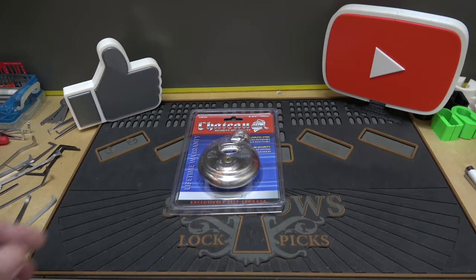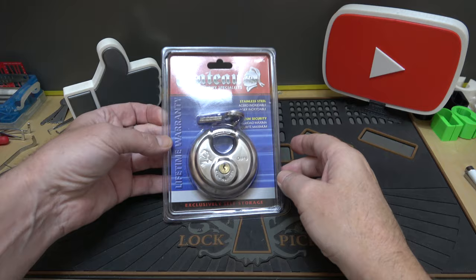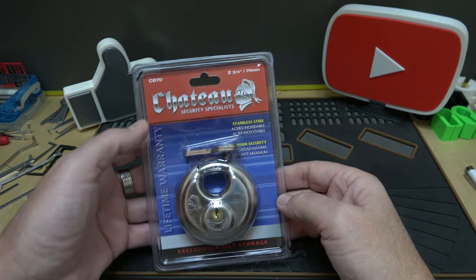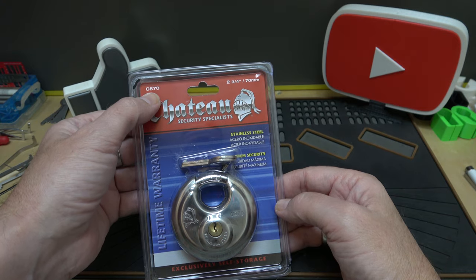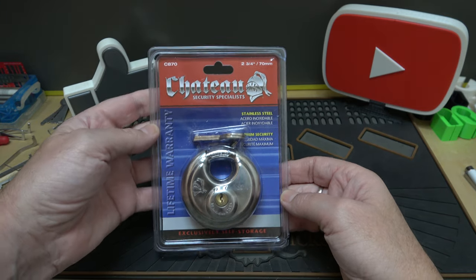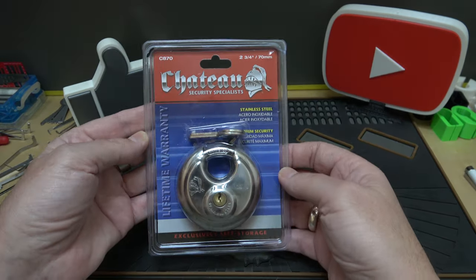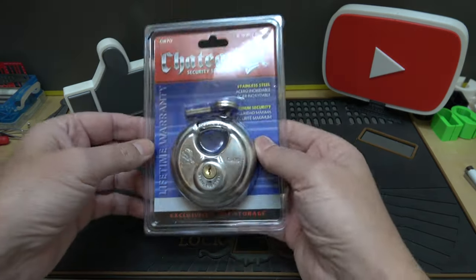Alright y'all, welcome back. It's Albert LaBelle and today we're going to take a look at this Chateau discus lock, the C870. We'll go ahead and get it out of this super shiny package so it doesn't blind anybody, and take a closer look at it.